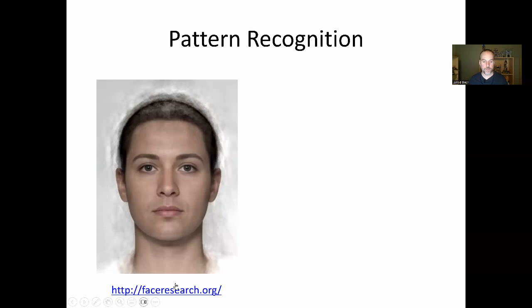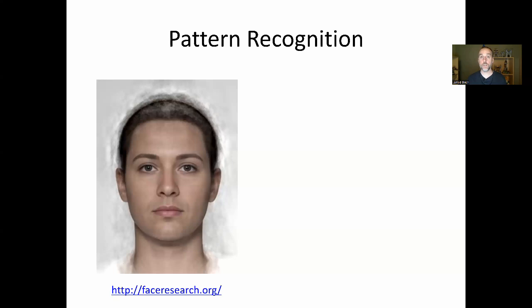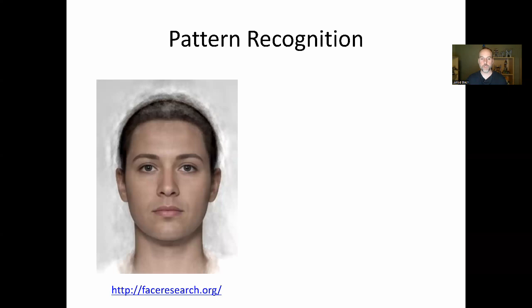From the website faceresearch.org, I averaged 50 male and 50 female faces together to create an average androgynous face. Interestingly, it's a relatively attractive face — because one thing attractive in faces is symmetry, and the average face is very symmetric. Individual faces may have slightly asymmetric ears or features, but averaging all those together removes that noise, and the average face ends up being quite attractive and symmetric.